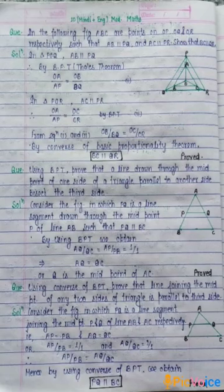Prove that a line drawn through the midpoint of one side of a triangle parallel to another side bisects the third side. The question is asking: if a line passes through the midpoint of one side and is parallel to another side, prove that it divides the third side into equal parts.